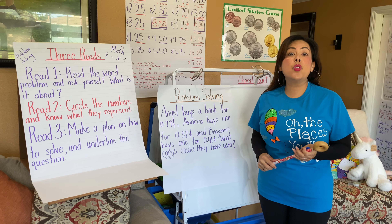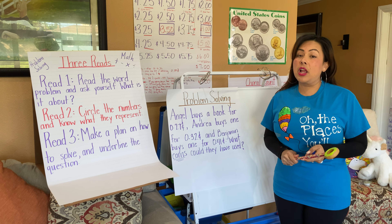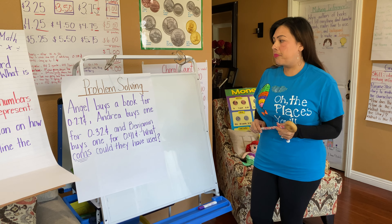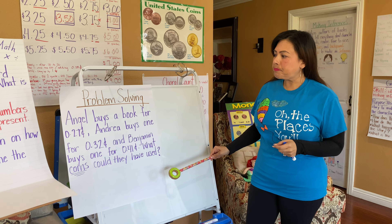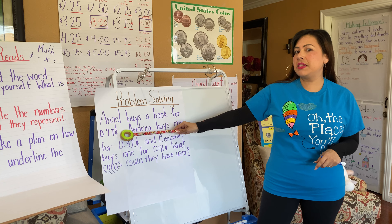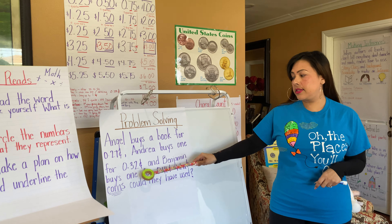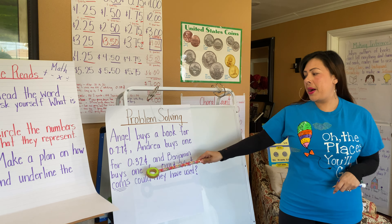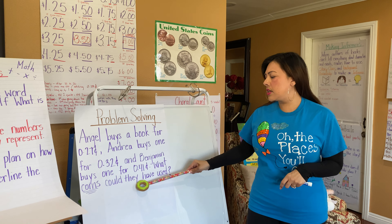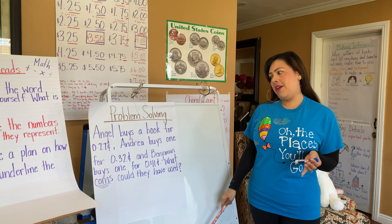Let's go over our three reads. The first time we read a word problem, we're going to focus on: what is it about? What's the problem about? The second time, we're going to circle the numbers and we have to know what the numbers represent — do they represent cookies, cars, coins? The third read, we make a plan: how are we going to solve it? Are we going to add, subtract, use pictures or drawings?